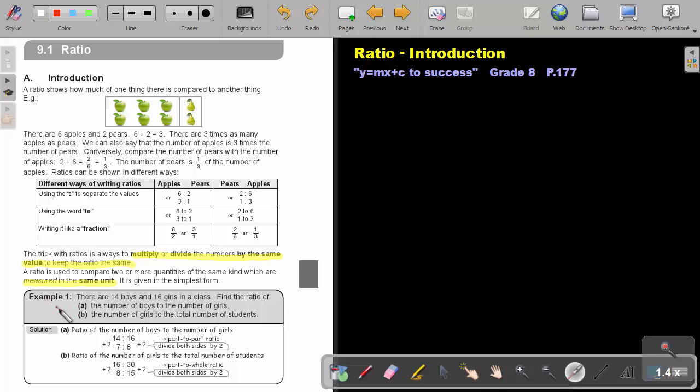Let's look at an example. Example one: There are 14 boys and 16 girls in a class. Find the ratio of the number of boys to the number of girls. So if I say ratio of the number of boys to the number of girls, the boys are 14, the girls are 16. Now look for a number that I can simplify this ratio. I can divide by two. Remember, if I divide by two with this first number, I must also divide by two the second number. So I will get 7 to 8.